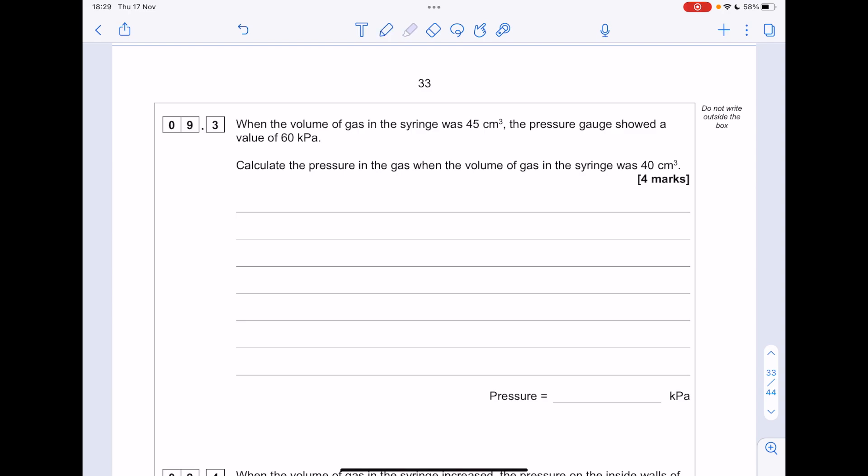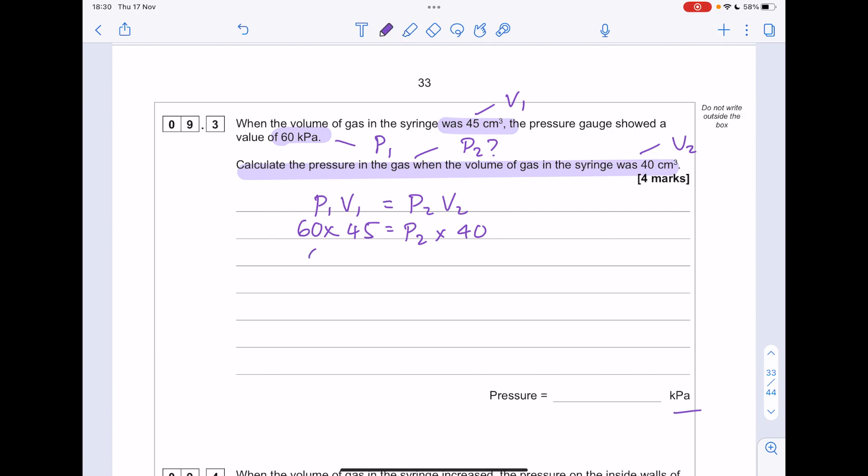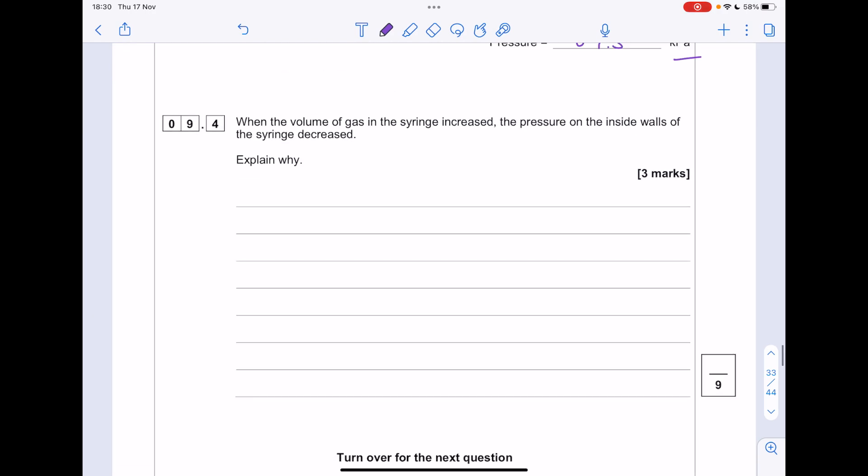When the volume of the gas in the syringe was 45 cm3, the pressure gauge showed a reading of 60 kPa. Calculate the pressure in the gas when the volume of gas in the syringe was 40. So you need this equation, p1v1 equals p2v2. We know that the first volume was 45. The first pressure was 60. We're being asked for p2. And we have a second volume of 40. So substitute in your values. We don't need to touch the units. 60 times 45 is 2,700. Divide both sides by 40 to find p2.